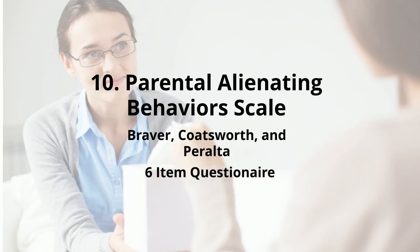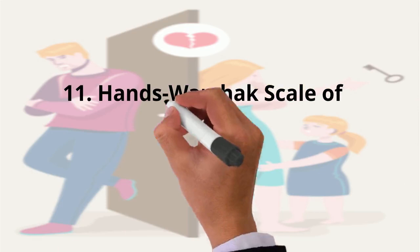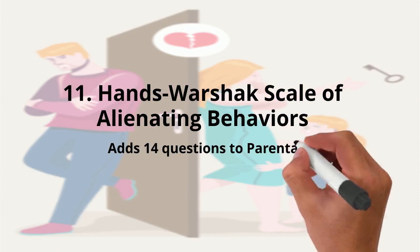The eleventh, Hans-Warshak Scale of Alienating Behaviors. It adds 14 additional questions to the previous tool, the Parental Alienation Behaviors Scale, to make it an even more accurate and reliable testing measure.